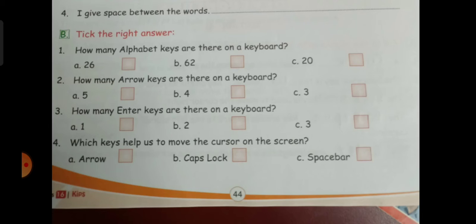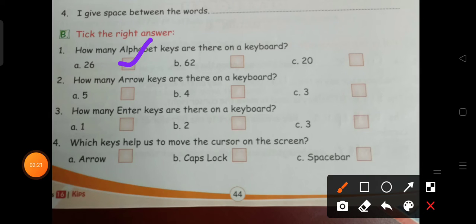Alphabets from A to Z—there are 26 alphabet keys on a keyboard. Next: How many arrow keys? We have seen the pictures in the matching part. There are four arrow keys.